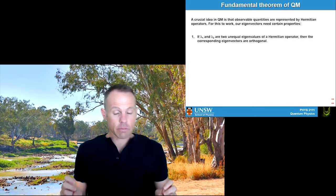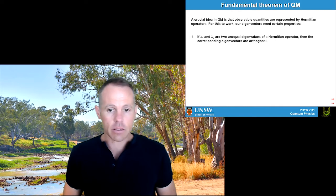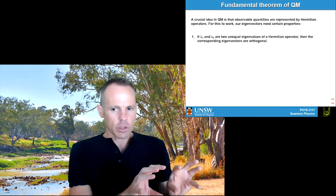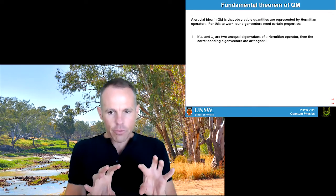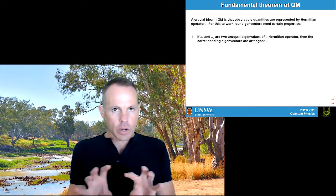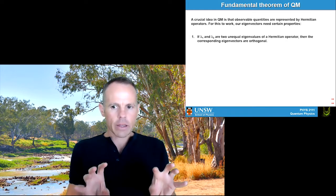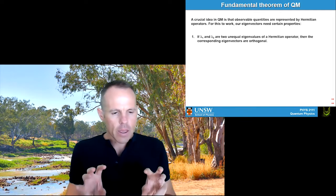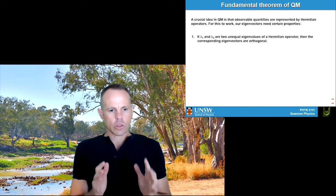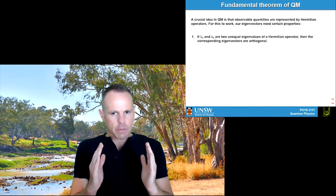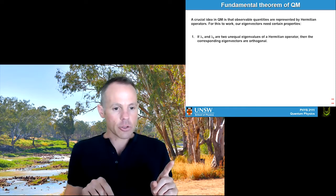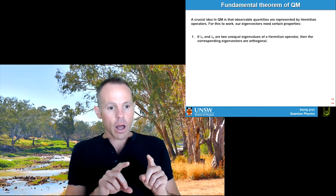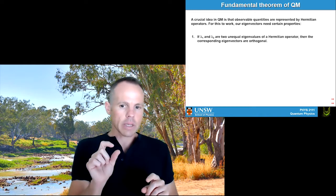Where we're going to start is with the fundamental theorem of quantum mechanics. The crucial idea behind it is that all observable quantities in quantum mechanics are represented by Hermitian matrices. An extension of this idea is that our eigenvalues and eigenvectors need to have certain properties. You'll remember from the last lecture, we can take a given operator as a matrix and calculate the eigenvalues and the eigenvectors. For an n by n matrix, we'll get n eigenvalues. Those eigenvalues are not necessarily equal to each other, but sometimes can be.